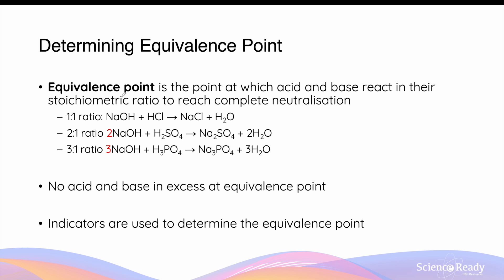The equivalence point in titration refers to the point at which an acid and base react in the stoichiometric ratios to reach a complete point of neutralization. So this means when we have a base and a monoprotic acid, we have the same moles of both compounds reacting to form the salt and water. The stoichiometric ratio between acid and base doesn't need to be necessarily one-to-one all the time. It can be two-to-one, whereby we need two moles of sodium hydroxide for every one mole of a diprotic acid, for example sulfuric acid. And this again gives us a salt and water.